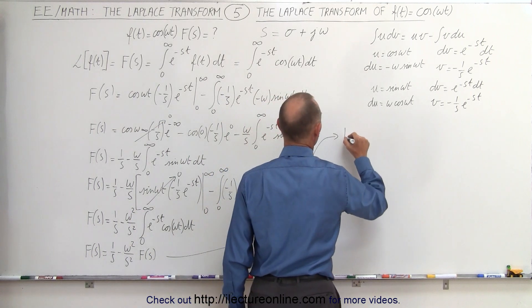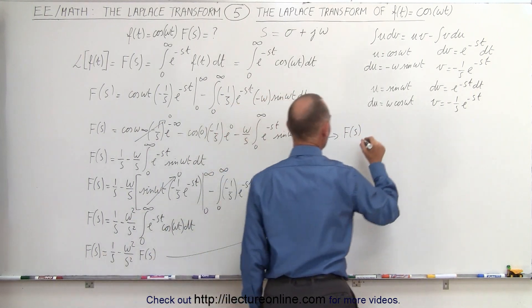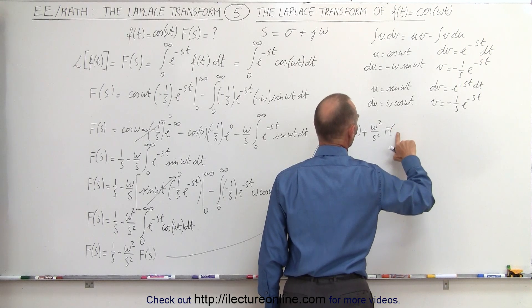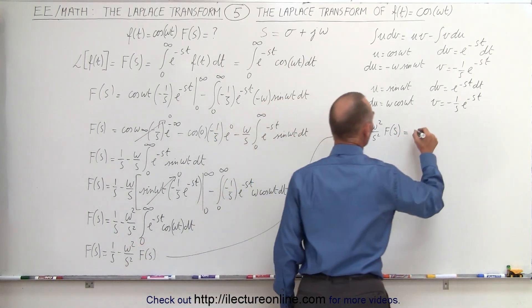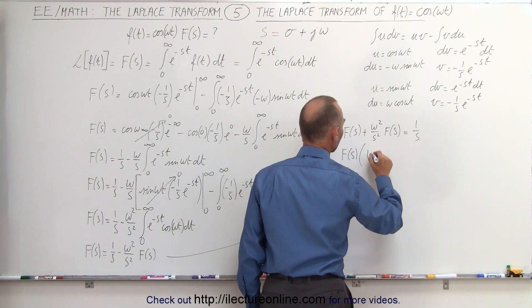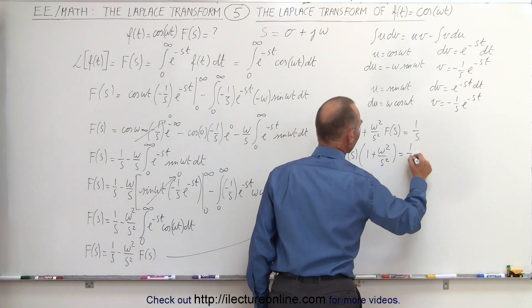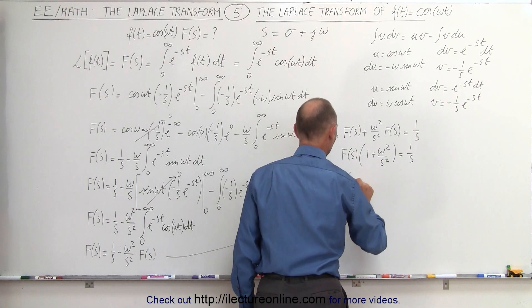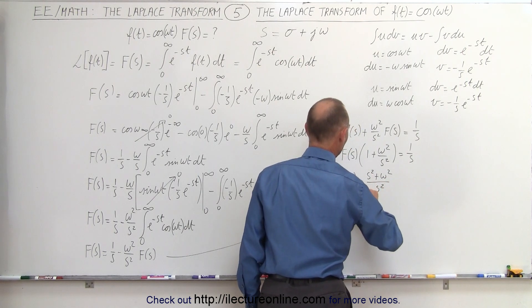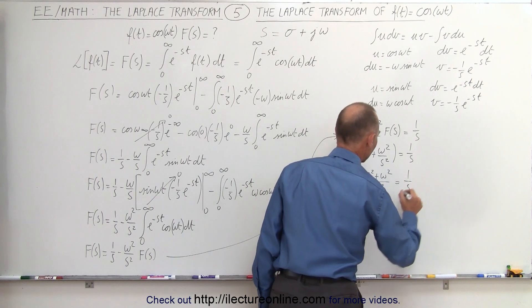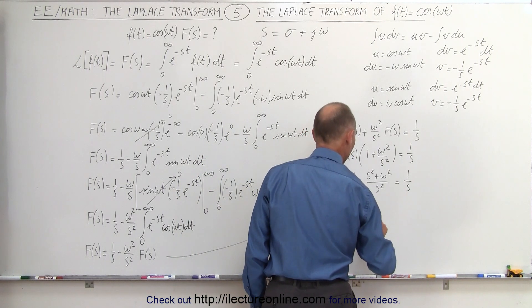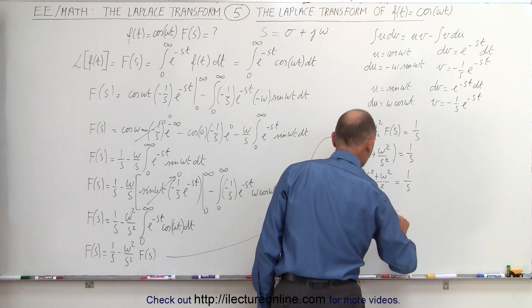Now all we have to do is solve algebraically for F(s). Moving the F(s) term to the left side, the minus becomes a plus: F(s) + (ω²/s²)·F(s) equals 1/s. Factoring out F(s) gives F(s)·(1 + ω²/s²) = 1/s. Writing over a common denominator: F(s)·(s² + ω²)/s² = 1/s. Cross-multiplying and canceling one s, we arrive at F(s) = s/(s² + ω²).